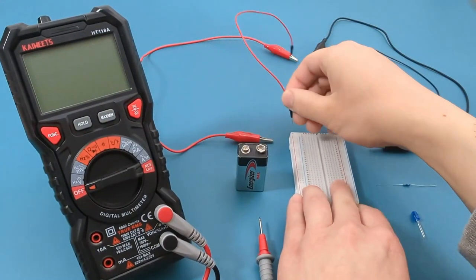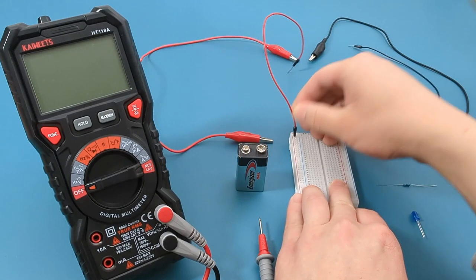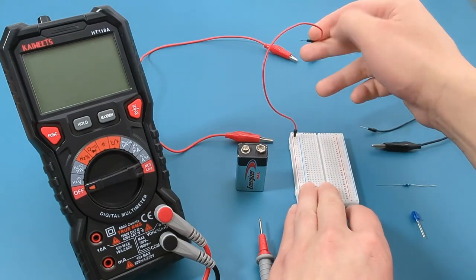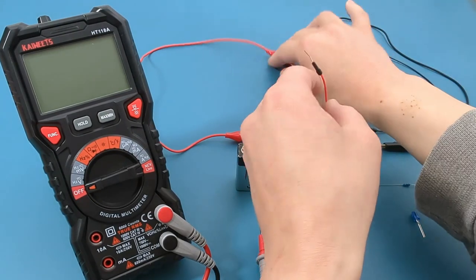Connect the red jumper wire to the positive end of the breadboard. Connect the other end of the red jumper wire to the red alligator clip.